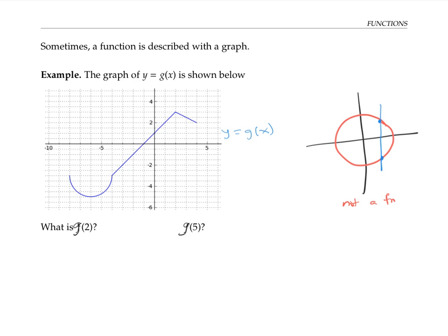Let's evaluate g of two. Two is an x value, and we'll use the graph to find the corresponding y value. I look for two on the x-axis and find the point on the graph with that x value. The y value of that point looks like three, therefore g of two is equal to three. If I try to evaluate g of five, I run into trouble — five is an x value, but there's no point on the graph with that x value. Therefore, g of five is undefined, or we can say it does not exist.